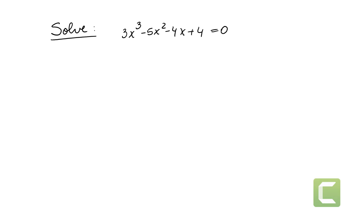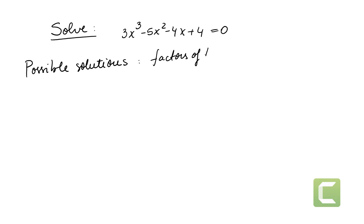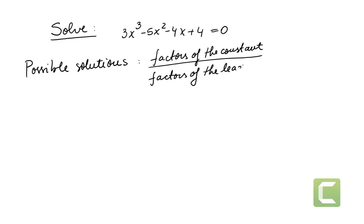We have to look for possible solutions. Possible solutions are obtained by finding the factors of the constant over the factors of the leading coefficient — which means, in our case, the factors of 4 over the factors of 3.